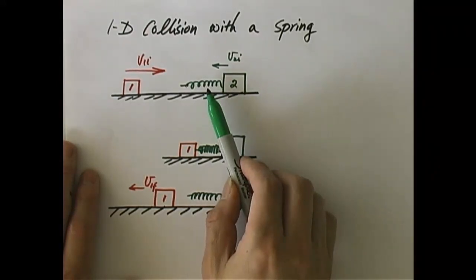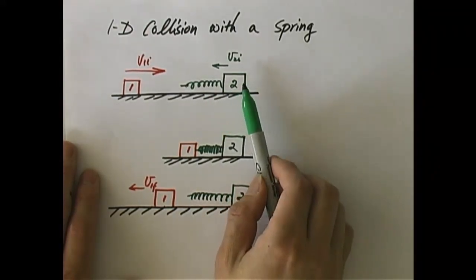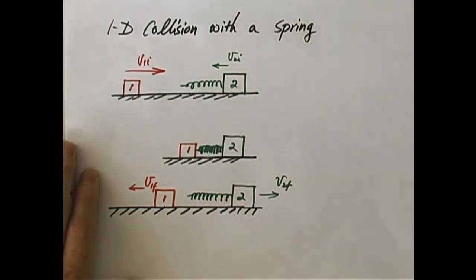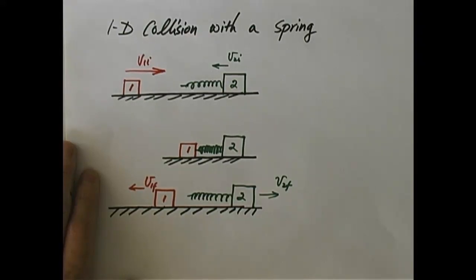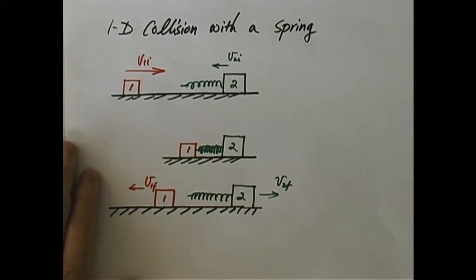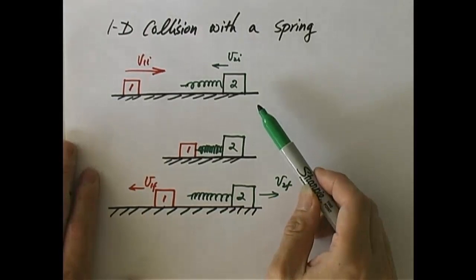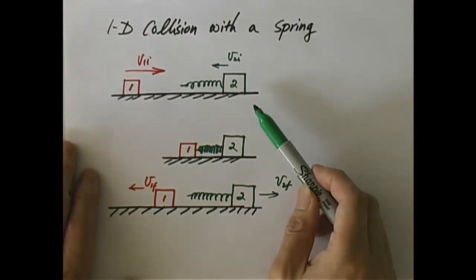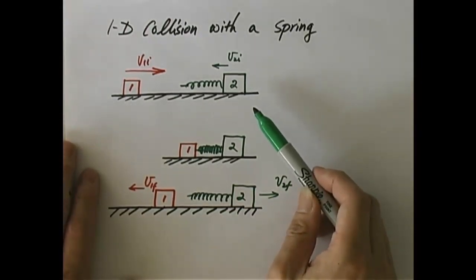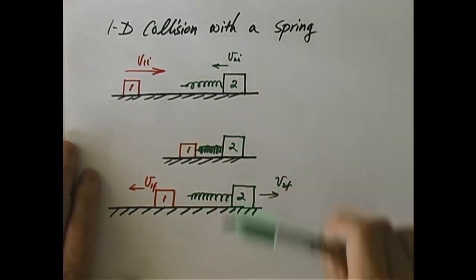The spring is part of object 2. If I consider object 1 and 2 as a single system, the spring is part of the system. Whatever force it gives to object 1 and 2, it remains internal. So if you consider object 1 and 2 as a single system, the momentum conservation still holds true, unless of course you consider some friction from the floor, which we say does not exist. So you still can use conservation of linear momentum for every moment of the collision.